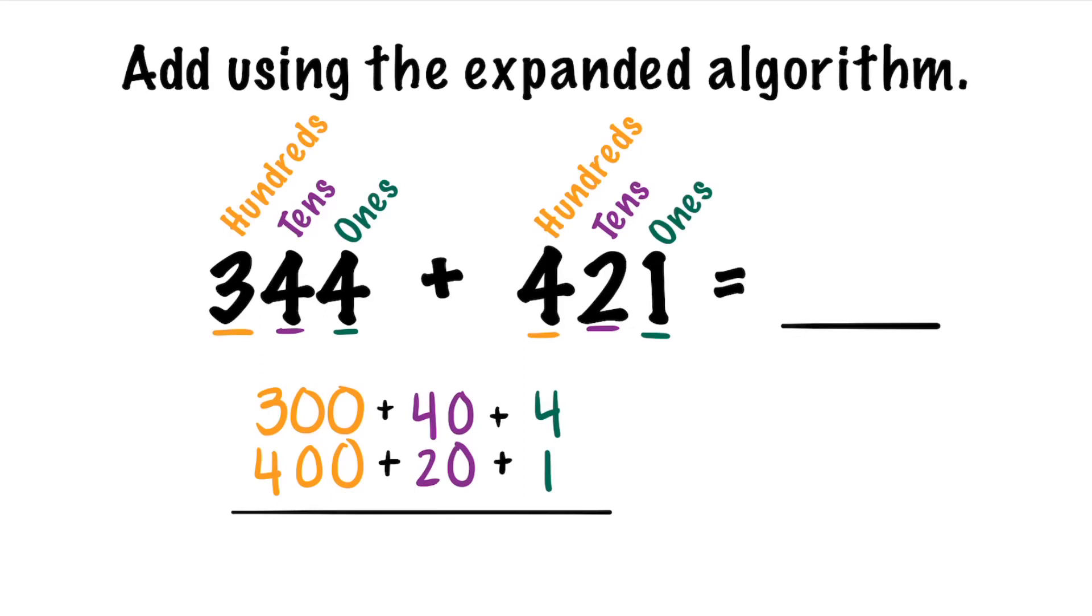Now we can go ahead and add up our hundreds. We know 300 plus 400 is 700. 40 plus 20 makes 60 and 4 plus 1 makes 5.